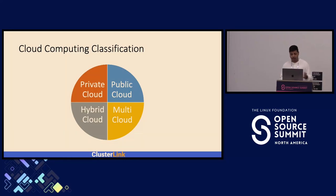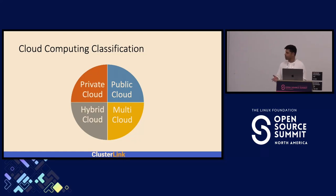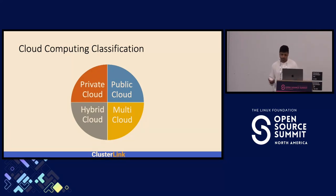Hybrid cloud is a combination of private and public cloud to meet security, redundancy, and reliability requirements. And finally, multi-cloud, where multiple cloud providers and private on-prem are used to host the business needs of the enterprise.